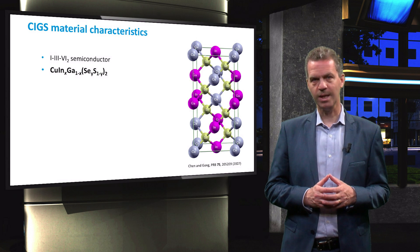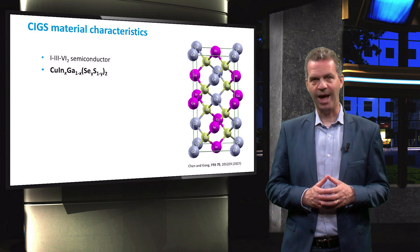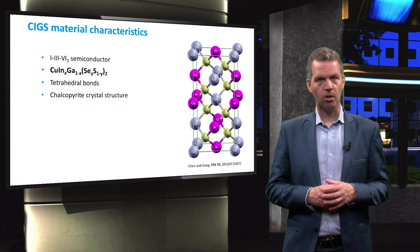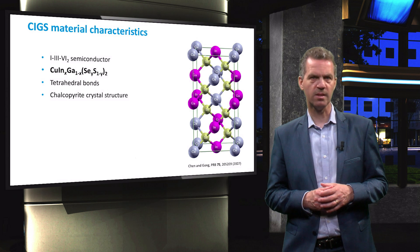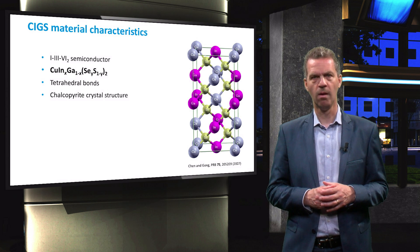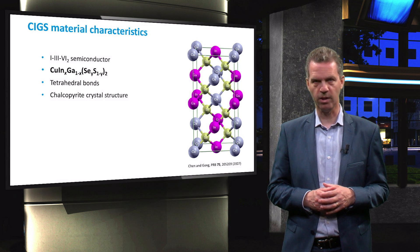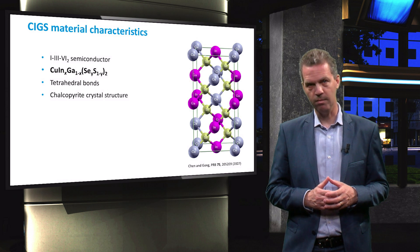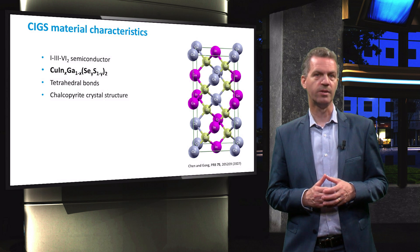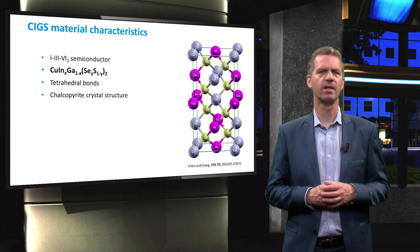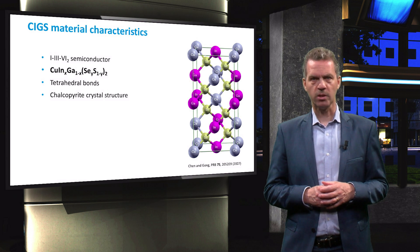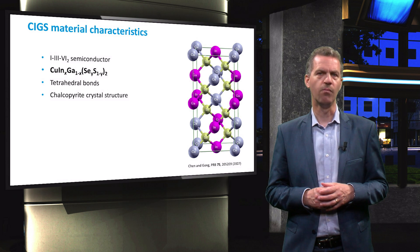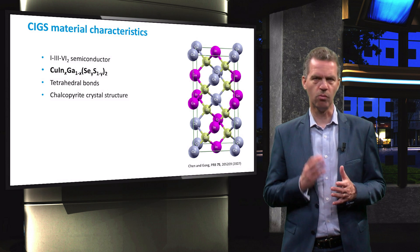We then arrive at the following chemical expression, with X and Y ranging between 0 and 1. The chalcopyrite structure, shown here on the right, receives its name from the tetrahedral bonded copper iron disulfide structure. In this case, however, the iron atoms are replaced by gallium and indium atoms, while the sulfur is partially or completely replaced by selenium. The structure is rather complex, but you can clearly see the tetrahedral structure in which every atom is bonded to four neighbors.